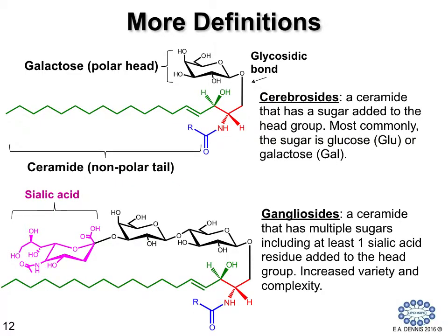Ceramides can also be modified to form complex glycolipids. The ceramide backbone, when it acquires a sugar on the hydroxyl group, becomes a cerebroside. There are two common cerebrosides: galactocerebroside, when the sugar is galactose, and glucocerebroside, when the sugar is glucose. This constitutes the addition of a single sugar through a glycosidic bond to the ceramide backbone. When additional sugars are added, including sialic acid, the compounds become gangliosides, which is a term for a ceramide that has multiple sugars, including at least one sialic acid residue.